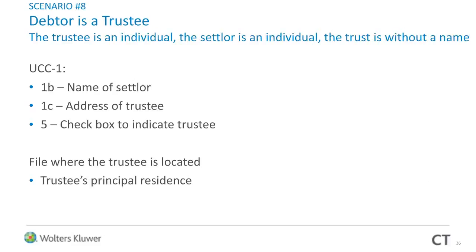Trust scenario eight: the debtor is a trustee, the trustee is an individual, the settlor is an individual, and the trust is without a name. On box 1B, name of settlor. On 1C, address of trustee. Check box 5 as trustee. This is a very rare scenario. The trustee's principal residence would be the address to use.